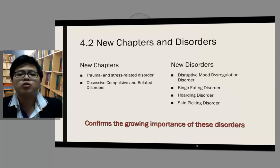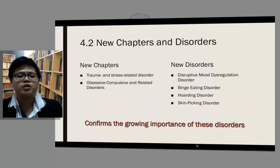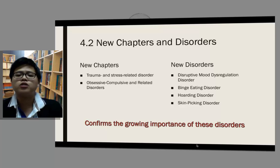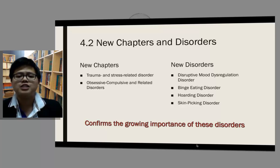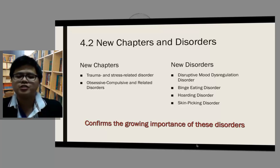New chapters and disorders are introduced in DSM-5 as well. New chapters include trauma and stress-related disorders, and obsessive-compulsive and related disorders. New disorders were also introduced, like disruptive mood dysregulation disorder, binge eating disorder, hoarding disorder, and skin picking disorder. The introduction of these new chapters and disorders confirms the growing importance of these disorders currently and in the future.